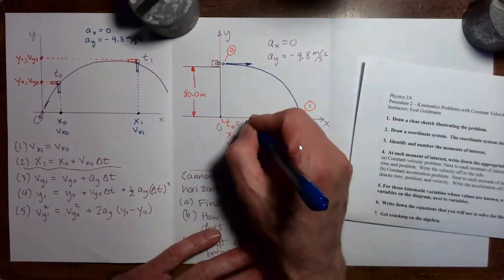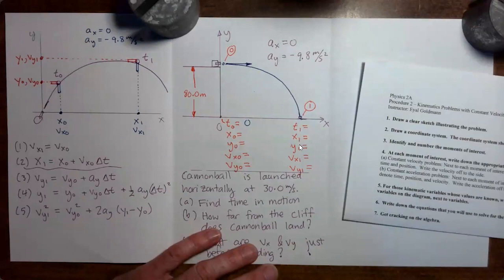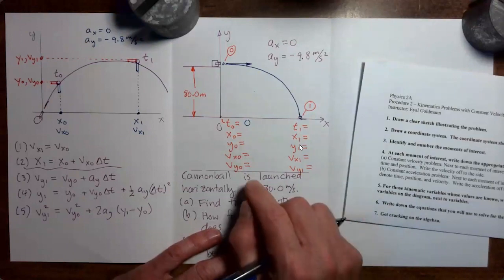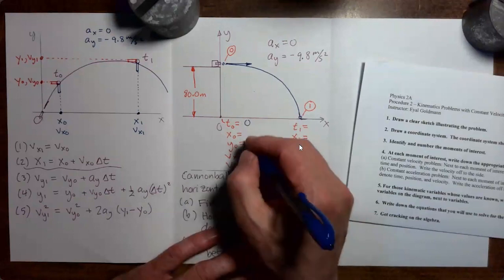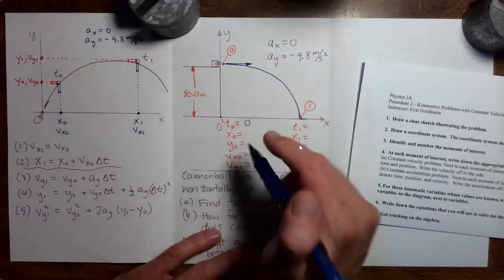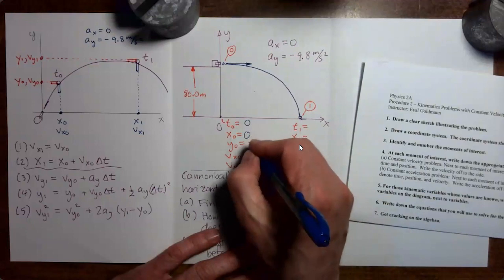Okay, let's say that time zero is zero. Now we have launched the projectile from x zero equals zero, and y zero equals 80 meters.